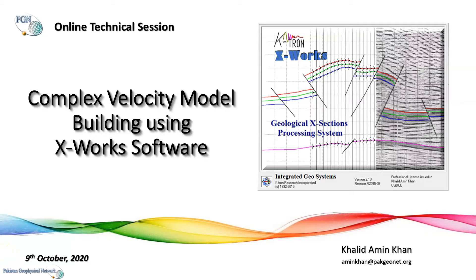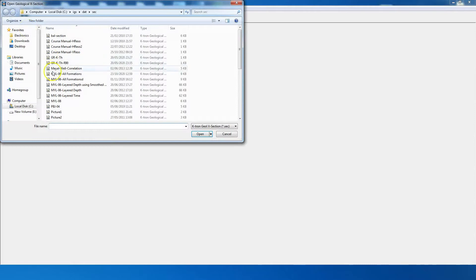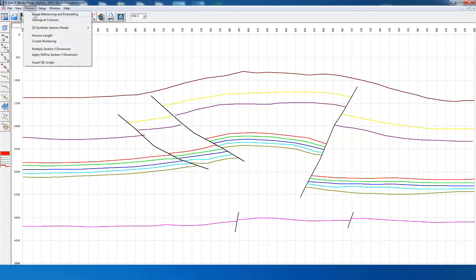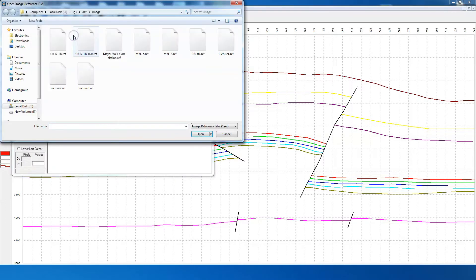We will now use the X-Works software to create a complex velocity model. X-Works is basically a software to create digital geological cross-sections, but it also has the facility to mark horizons and faults on a seismic image. This is the startup interface of X-Works software. We load interpreted horizons and faults from the seismic section, and we also load the seismic image.